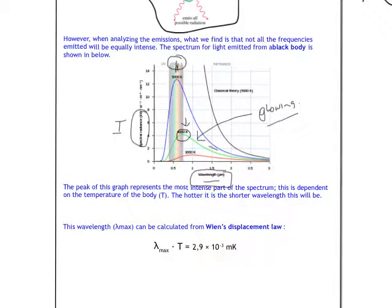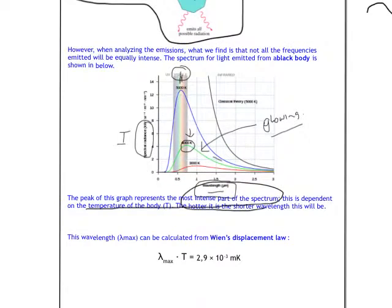And what does this peak represent? The peak of this graph represents the most intense part of the spectrum. Okay, and you can see that here. It's this bit, and it's probably going to be the wavelength that's most prevalent. So, if it's infrared, then it will be a hot object. If it's in the visible, it will be a nice bright object. If it's in the UV, then it will be something which is going to give you a tan. This is dependent on the temperature of the body. The hotter the object, the shorter the wavelength.